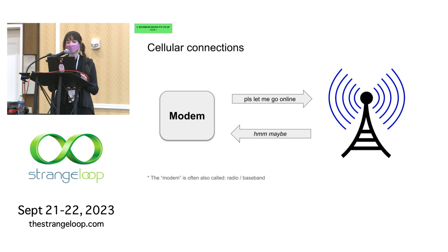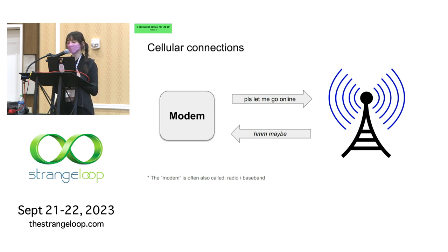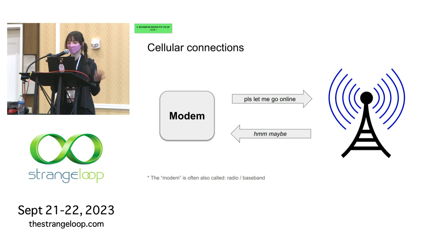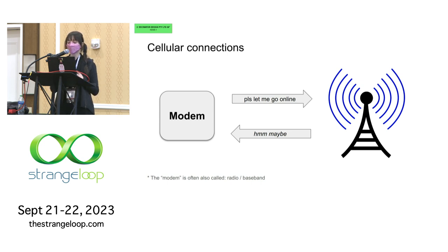Usually in these types of talks there is a diagram of a phone connecting to a cell tower. But to be more accurate, the physical chip in your phone which handles connecting to the cell towers is called a modem, also known as the radio or the baseband — all these terms are interchangeable. Modems are produced by OEMs such as Qualcomm, MediaTek, Samsung, et cetera. Android is separate from the modem: the modem has its own operating system, and Android and the modem have to communicate with each other across a hardware boundary.